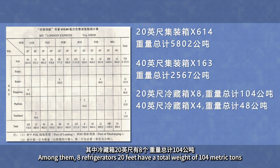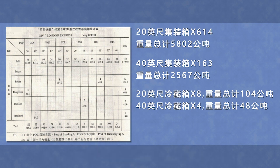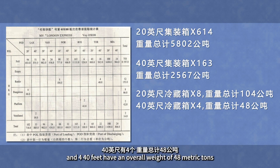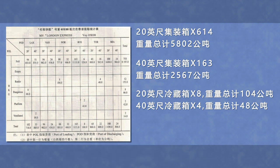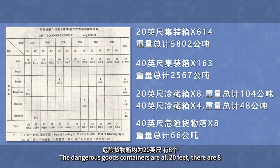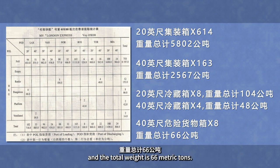其中冷藏箱20英尺有8个，重量总计104公吨；40英尺有4个，重量总计48公吨。危险货物箱均为20英尺，有8个，重量总计66公吨。